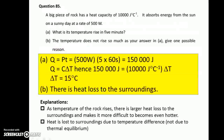Question 85. A big piece of rock is placed under the sun, absorbing energy from the sun at the rate of 500 W — that is 500 J per second. So in 5 minutes, it will absorb altogether 150,000 J of energy. The heat capacity of the rock is 10,000 J per degree Celsius. You may then apply equation 6 to find the temperature rise of the rock. But the actual temperature rise is usually smaller, because there is heat loss to the surroundings.